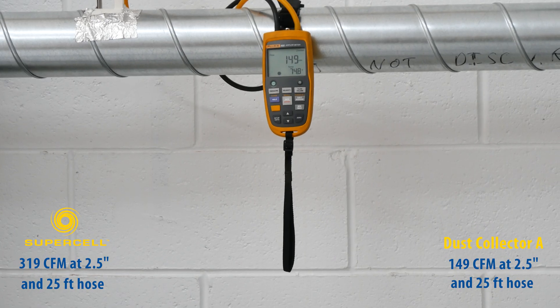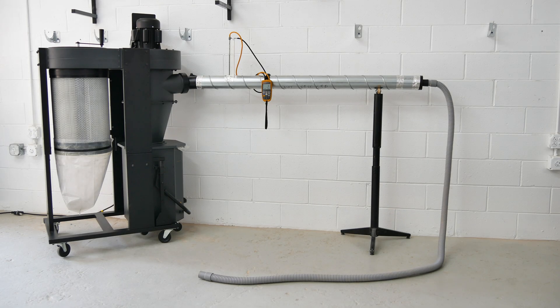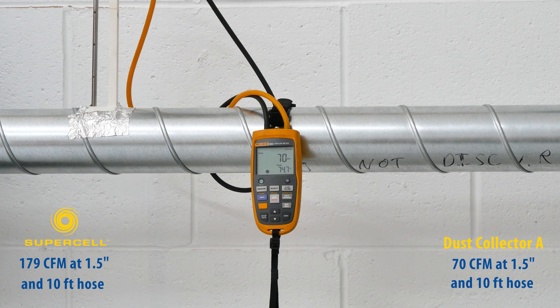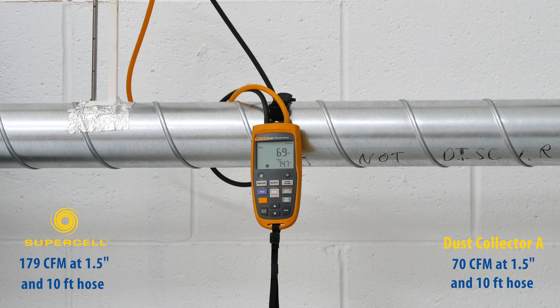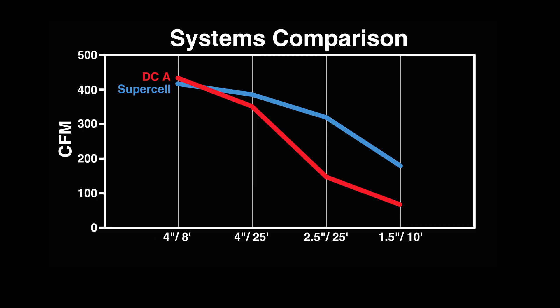Finally, with 10 feet of 1.5-inch hose, Dust Collector A comes in at 70 CFM. While Dust Collector A initially has slightly more CFM, its airflow decreases significantly with longer hose length and reduced hose diameter.